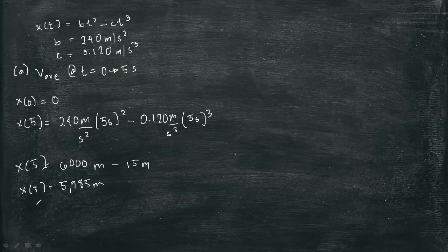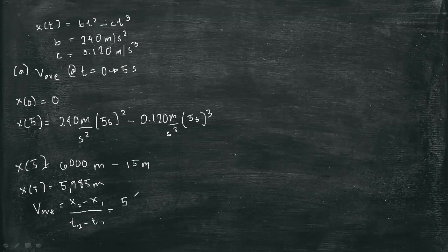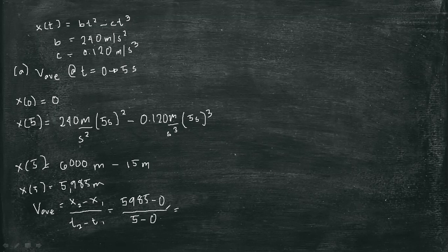So the average velocity is equal to displacement over elapsed time: (5,985 − 0) / (5 − 0) seconds. Therefore we have 1,197 meters per second.